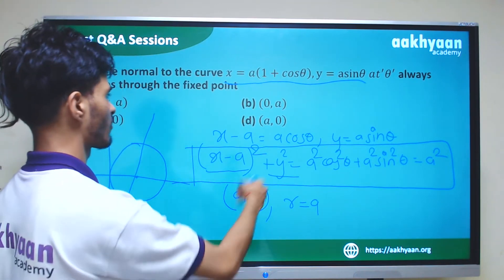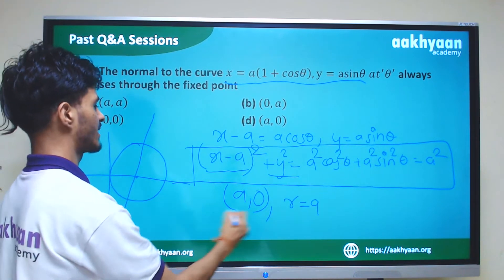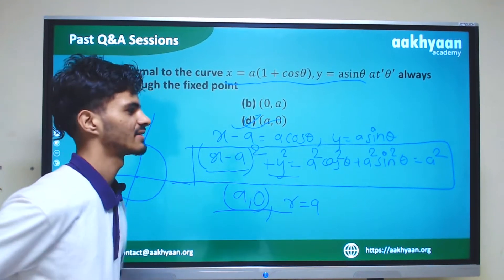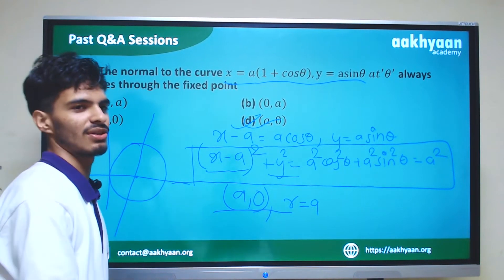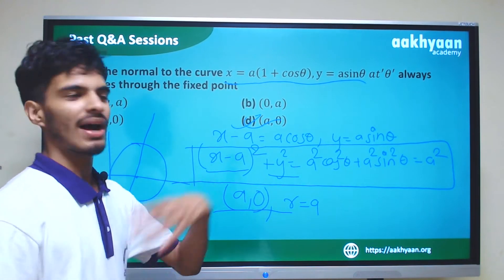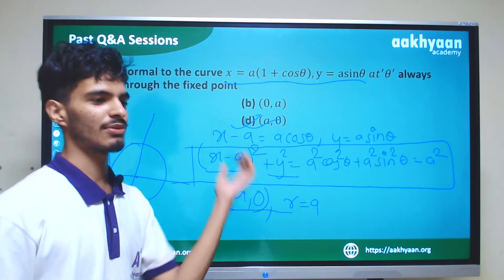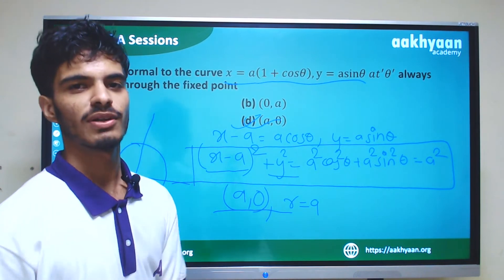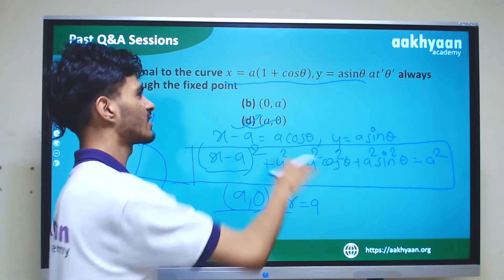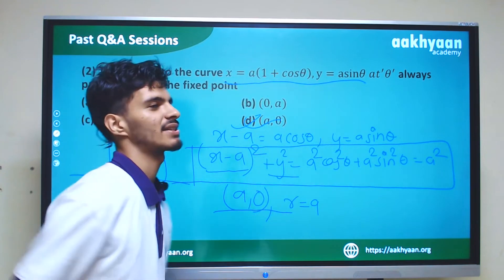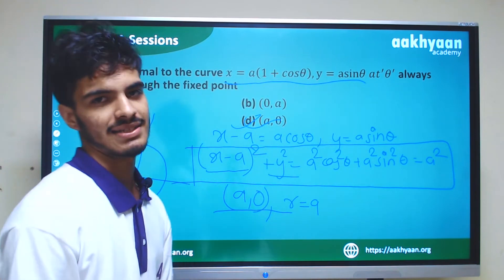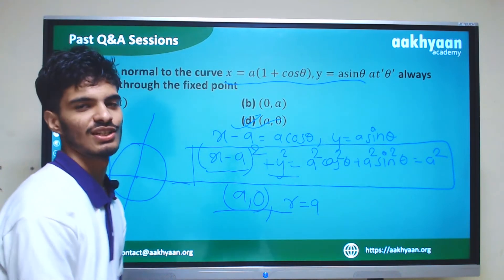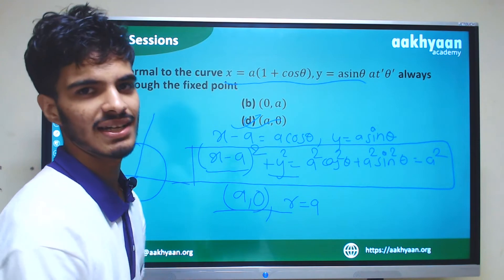So the normal passes through the point (a, 0). The condition for perpendicular lines is m1 × m2 = −1. These are the correct answers.